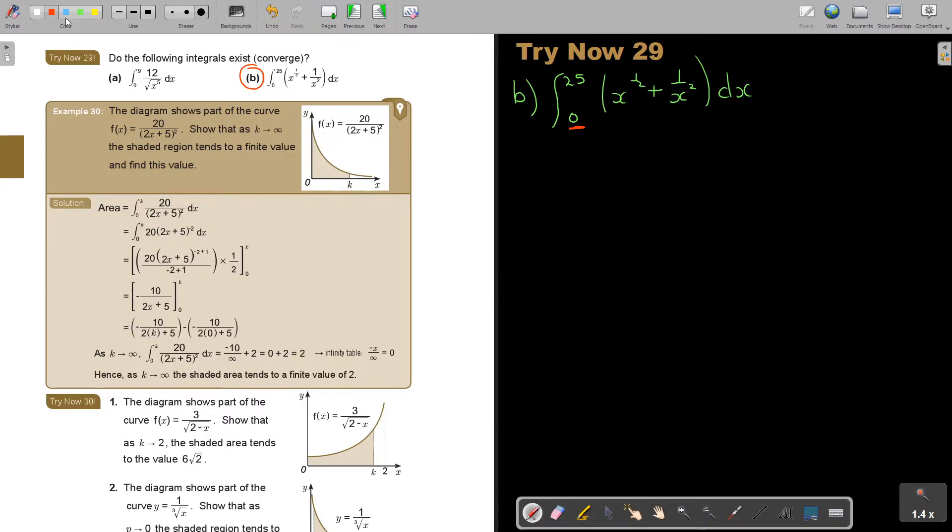So I'm going to say, if 0 is equal to T, then the integral from T to 25. And I'm getting this ready, I'm just taking this up: x to the half plus x to the power of negative 2 dx.